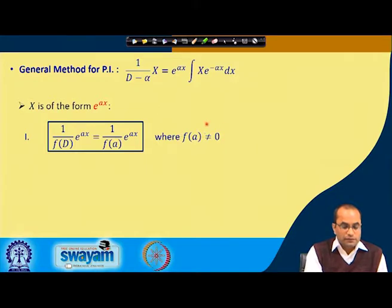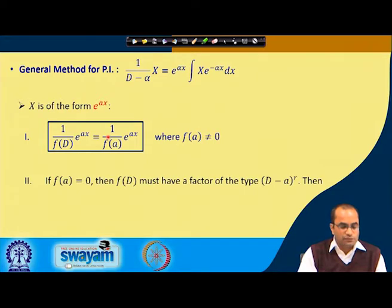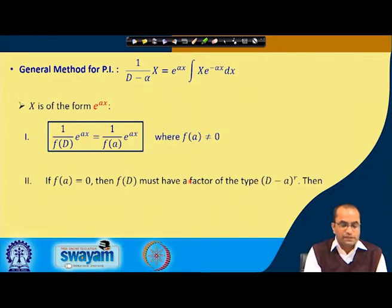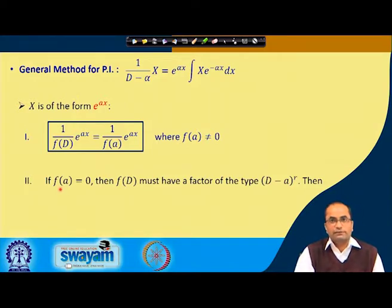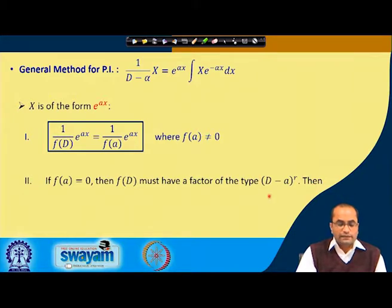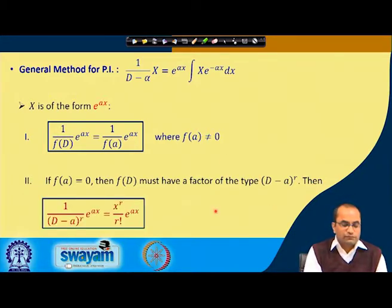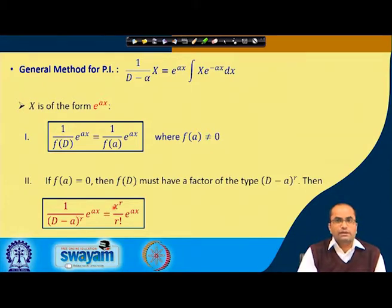However, this requires that f(a) must not equal zero. When f(a) equals zero, f(D) must have a factor (D minus a)^r for some integer r = 1, 2, 3, ... In that case, 1 over (D minus a)^r applied on e^(ax) gives x^r over r! times e^(ax).